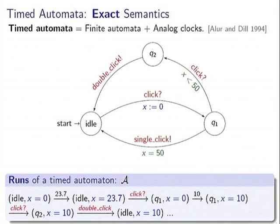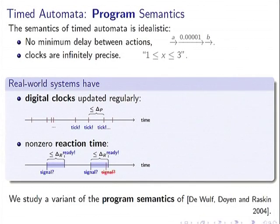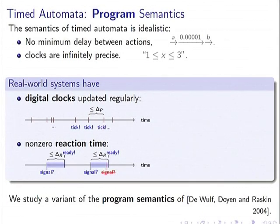I will call this the usual natural semantics — the exact semantics. But timed automata are of course abstract models, and this is why they are idealistic. For example, timed automata assume there is no minimum delay between actions, meaning the system is assumed able to do two actions one after another with a very small delay — which is not realistic in real systems. We also assume clocks are perfectly continuous and infinitely precise.